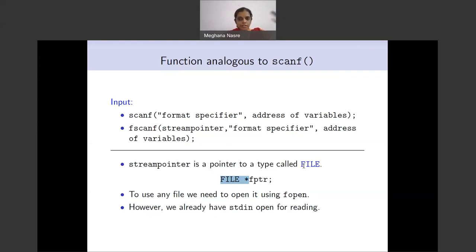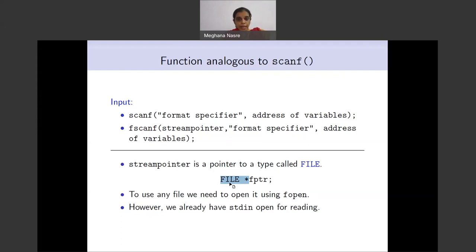What you are saying is that this stream pointer is a pointer to a type called FILE which has been defined for us — just like we define user-defined types such as student, point, and rectangle. So FILE is something which is also made available to us, and therefore we can define a pointer to this type by saying FILE* fptr as our variable name.